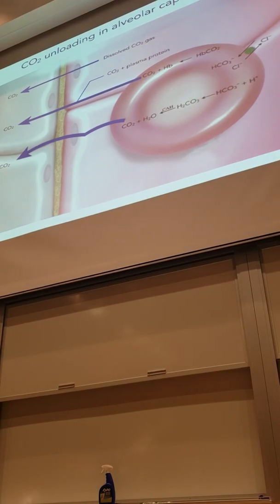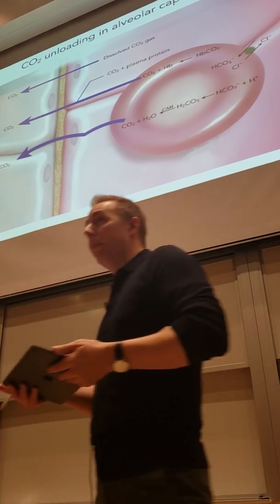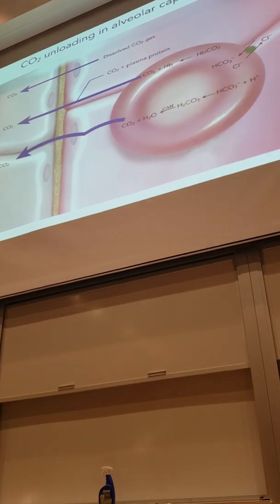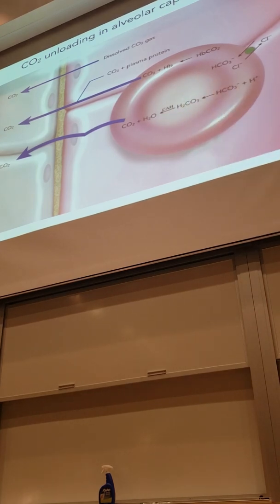So which way is chloride going to go now? So in our systemic capillaries, we have chloride coming into the red blood cells and leaving the blood plasma. Now we've got chloride going back. So arterial blood is going to have high levels of chloride. Venous blood is going to have low levels of chloride. So that's called chloride shift. It happens both ways in either capillary.